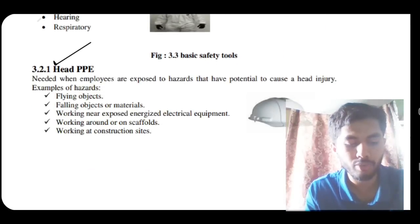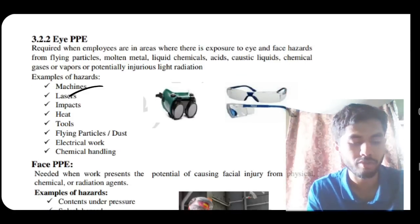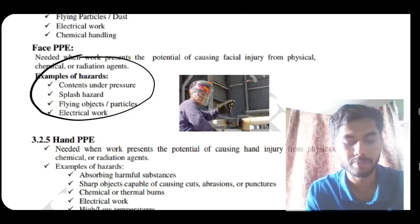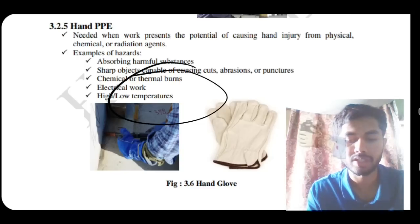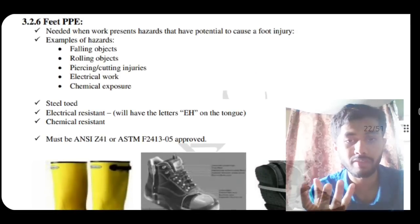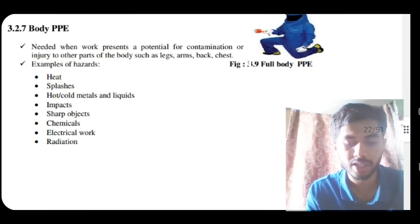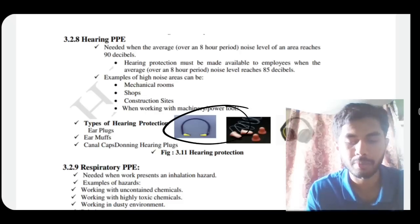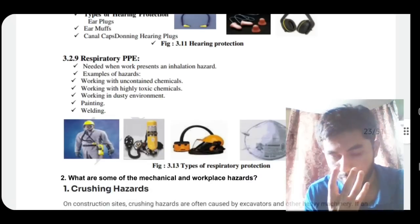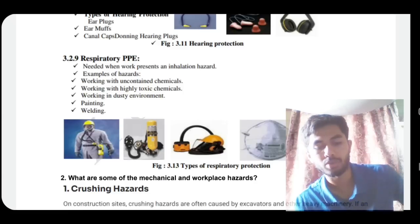Head PPE: for falling or flying objects, working near fire, energized equipment, or construction sites — wear a helmet. Eye PPE: for sharp objects, chemicals, flying particles, or electrical work — wear eye protection. Face PPE: for splashing substances — wear a face shield. Hand PPE: for harmful chemicals, cuts from sharp substances, or high/low temperatures — wear gloves. Feet PPE: for heavy falling objects — wear safety footwear. Body PPE: covers the body from chemicals and sharp objects. Hearing PPE: for very loud environments — wear ear protection. Respiratory PPE: for harmful gases or dust particles that can damage lungs — wear a respirator.